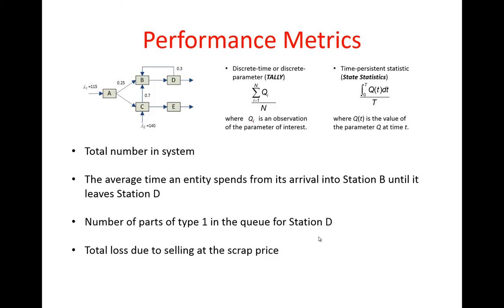Let's start with our first statistic or metric, which is the total number in system. When you really think about this statistic, it's a state statistic because what we need to track is the number of parts regardless of their type in the whole system over time. That requires a time average in order for us to be able to estimate its value.